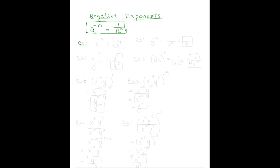For example, x to the negative 3 is equal to 1 over x cubed. Another example using a base of 3: 3 to the negative 2 is 1 over 3 squared, which is 1 over 9.